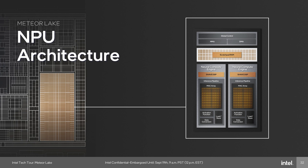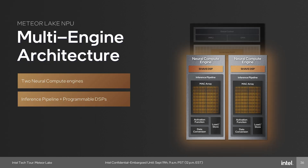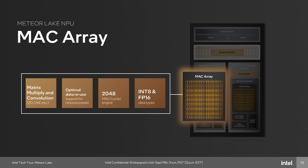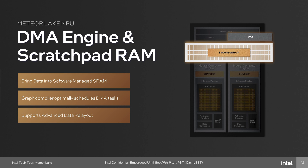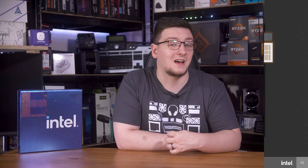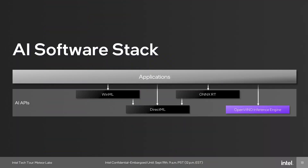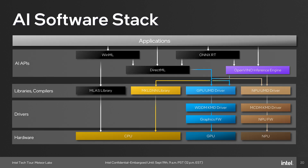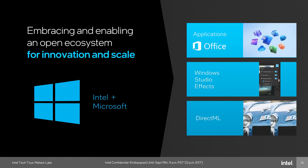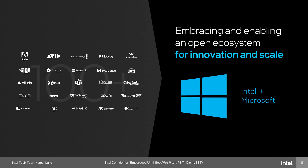The NPU itself is made up of two compute units, each housing 2048 MAC units — matrix multiplication and convolution units — sharing scratch pad RAM for faster data access. Intel supports a number of APIs including WinML, DirectML, ONxRT, and OpenVINO, with a heavy focus on Windows integration, as DirectML is a Windows standard for machine learning. We'll have to wait and see what programs end up making use of this, but it's pretty exciting.